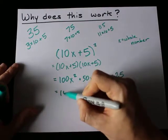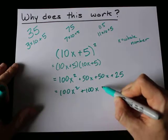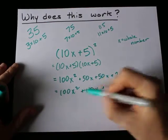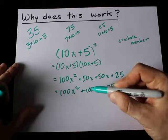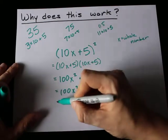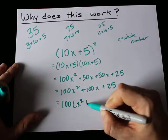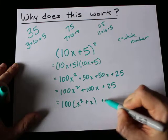I'm going to collect my like terms. I get 100x squared, plus 100x, plus 25. And the fact that both of these have a coefficient of 100 is the key to why this works. I'm going to factor that 100 out for you. Leave myself with x squared plus x, plus 25.